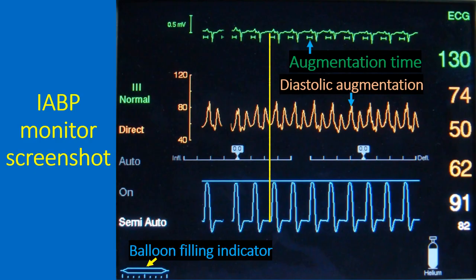On the IABP screen, the uppermost green tracing is the electrocardiogram, which is used to time the inflation and deflation of the balloon. The augmentation time is marked just below the tracing to indicate the exact point of inflation and deflation. The arterial pressure tracing just below that indicates the diastolic augmentation.